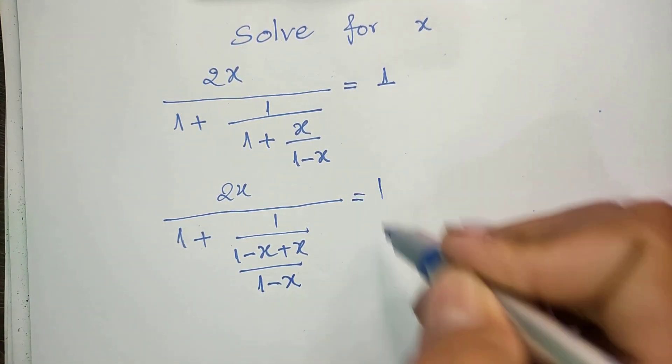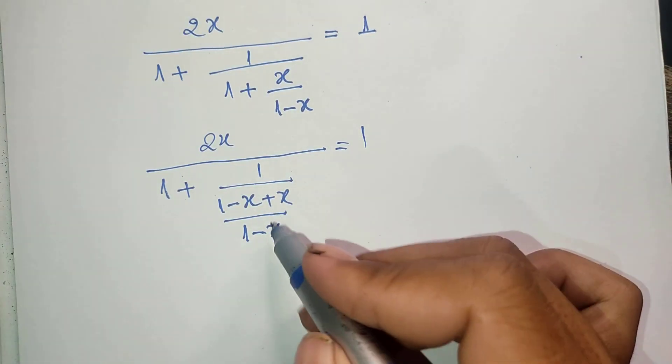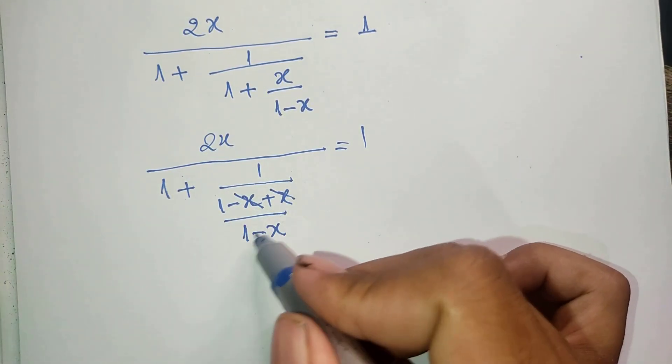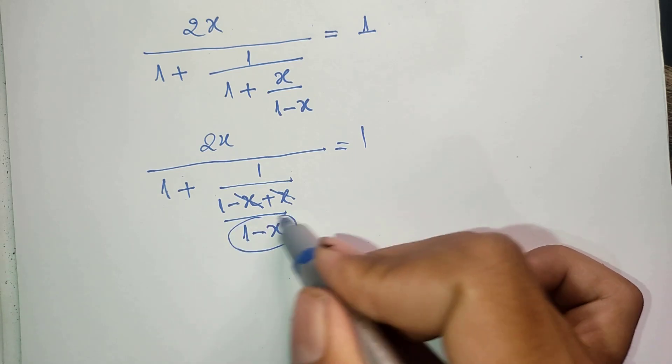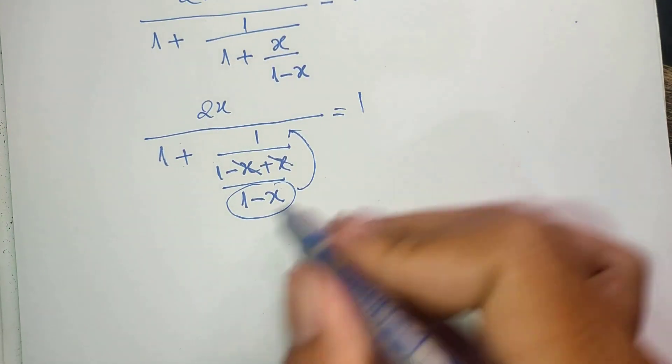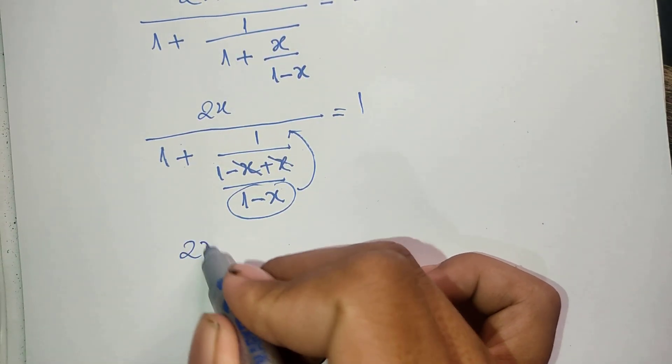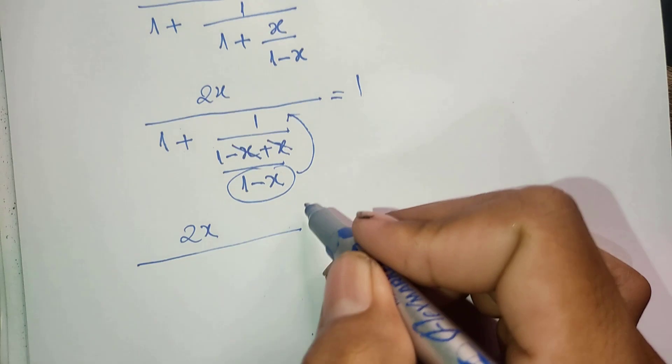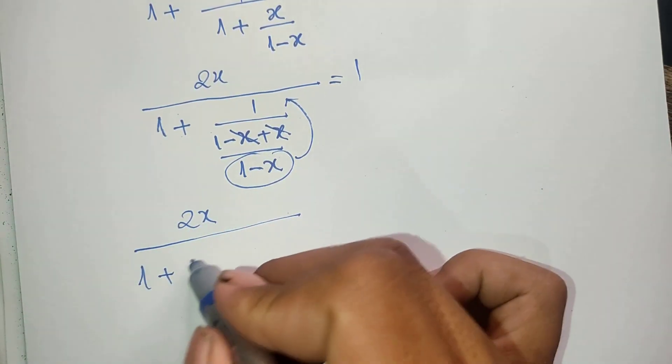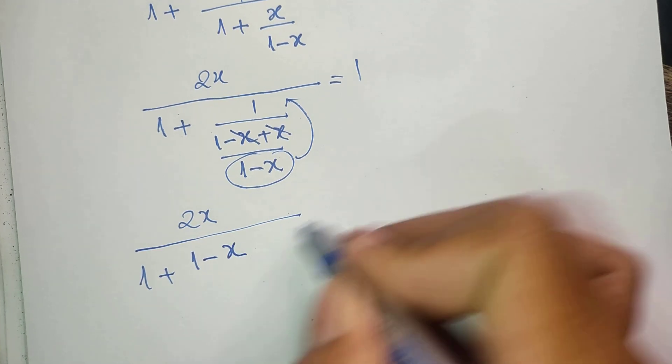And this we simplify it, we get 1. And this we multiply it, this, okay, that is equal to 2x and divided by 1 and plus, this we get 1 minus x, and this equals 1.